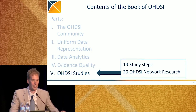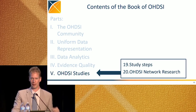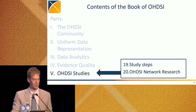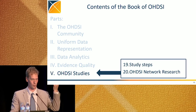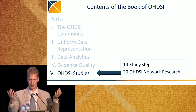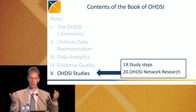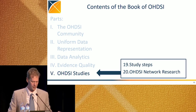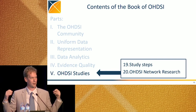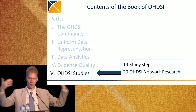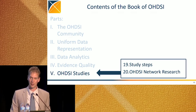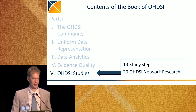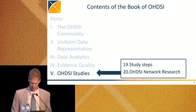The last part of the book is on Odyssey studies. There's one chapter called Study Steps specifically on if I want to do a study within my own organization — what are the steps to perform this on my own data? And then a separate chapter on, if I want to run this study across the Odyssey research network, what extra requirements does that pose on my analysis and how do I meet those requirements?